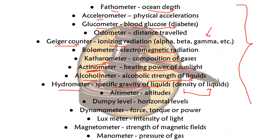Dumpy leveler measures horizontal levels. Dynamometer measures force, torque or power. Lux meter — L-U-X — measures intensity of light. You can remember this because your smartphone has a lux sensor which measures light and adjusts the screen brightness accordingly. Magnetometer measures the strength of magnetic fields. Manometer measures the pressure of gas.